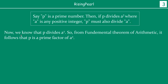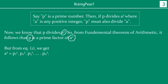We also know that p divides a squared. Why? Because it is given to us that a squared is divided by p. So from the fundamental theorem of arithmetic, it follows that p is a prime factor of a squared. Clearly, a squared can be divided by p, so whatever a squared is, p must be a prime factor of a squared. But from equation one, we just saw that a squared is nothing but p1², p2², p3², etc. It is important to understand that each of these are prime factors, and a squared is these squares multiplied together.